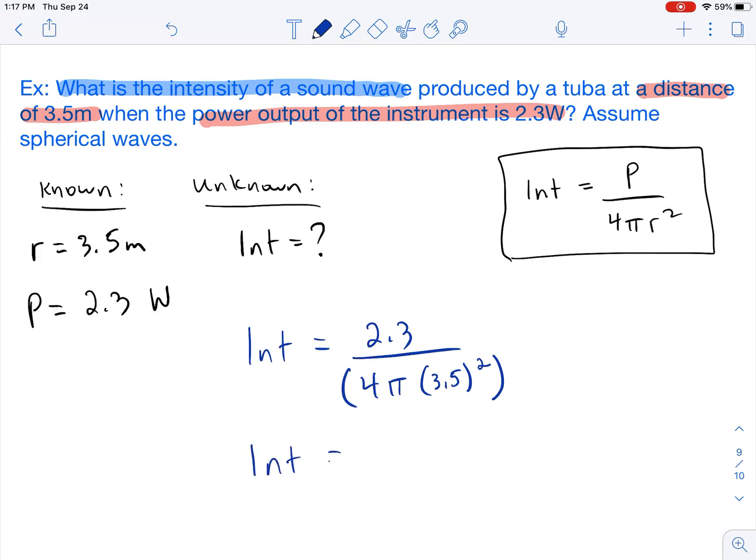So that's what I'm going to do. I'm just going to go ahead and plug this into my calculator all at once. So 2.3 divided by parentheses, 4 pi times 3.5 squared and parentheses.